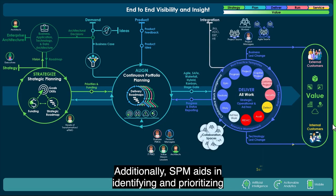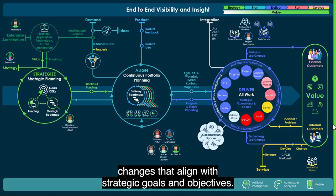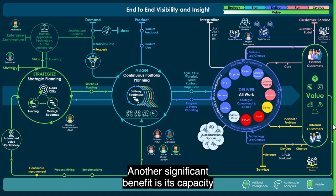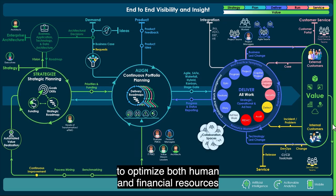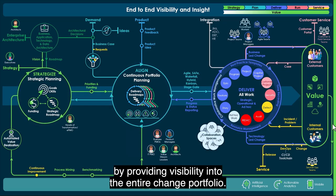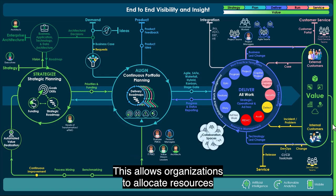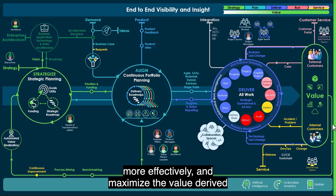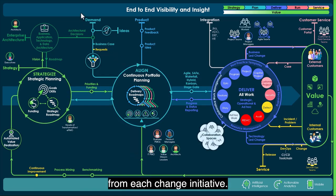Additionally, SPM aids in identifying and prioritizing changes that align with strategic goals and objectives. Another significant benefit is its capacity to optimize both human and financial resources by providing visibility into the entire change portfolio. This allows organizations to allocate resources more effectively and maximize the value derived from each change initiative.